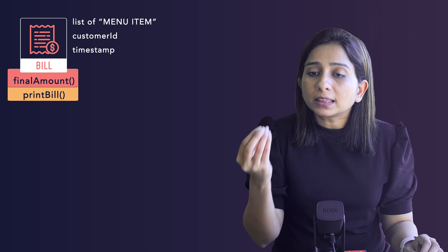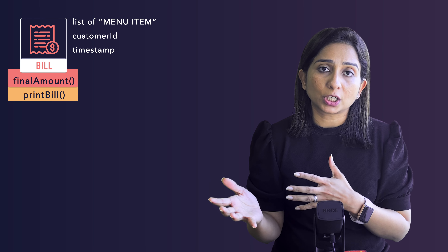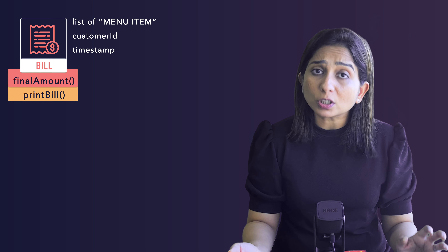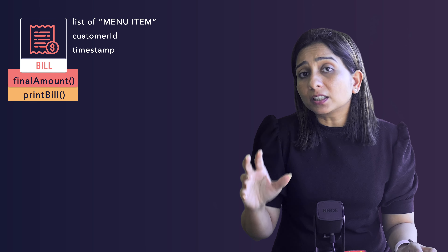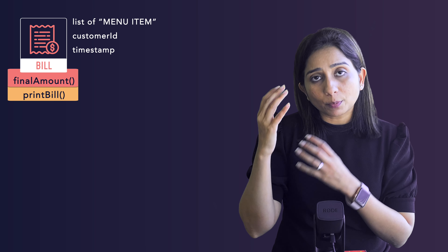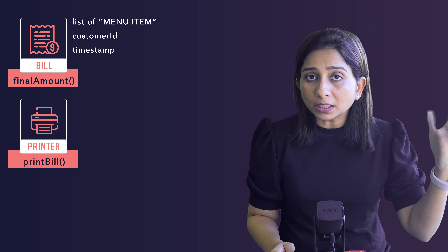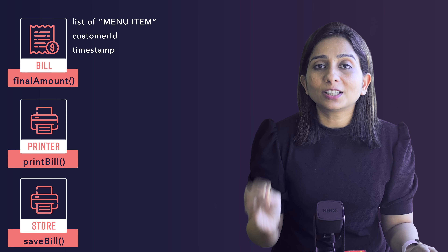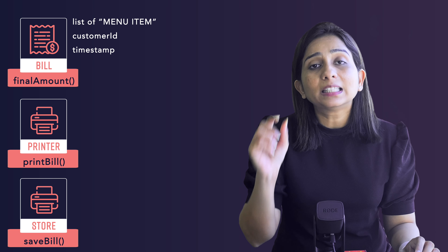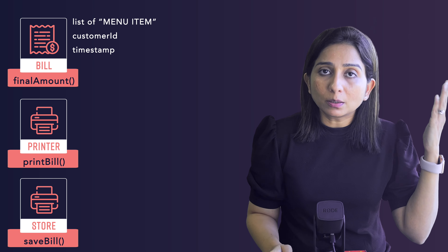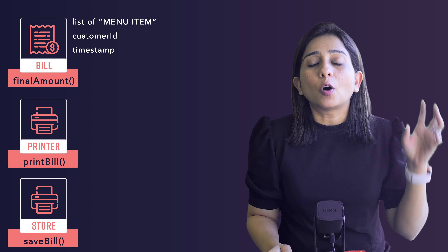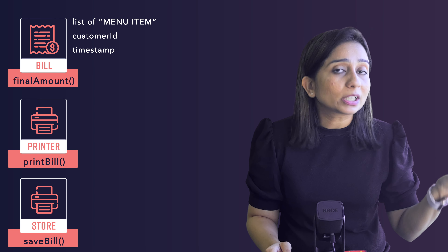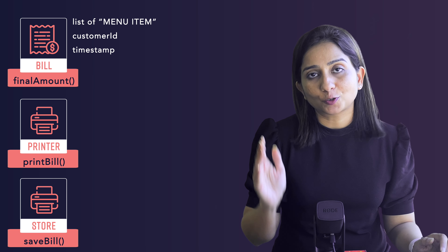Similarly, printing the bill — the print format might require changes, and if that change impacts the whole Bill class, it is again breaking the Single Responsibility Principle because so many things are happening inside one class and a change in one method can impact another. So the best way is to decompose these classes: there can be a BillPrinter class, a BillStore class, and a Bill class whose sole responsibility is to calculate the final amount. This Bill object can then be passed to the BillPrinter class and to the BillStore class. However the store class wants to store the data — add or remove columns — it can do so without impacting the actual Bill class.